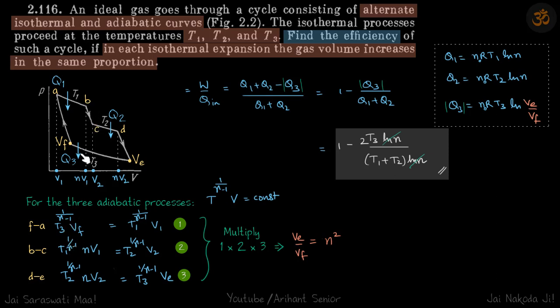T1 to this power times nV1 equals T2^(1/(γ-1)) times V2. And for the process DE, T2^(1/(γ-1)) times nV2 equals T3^(1/(γ-1)) times Ve.